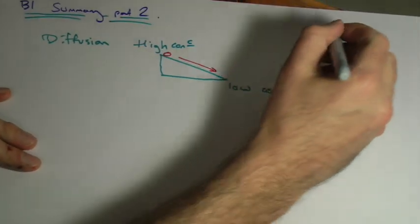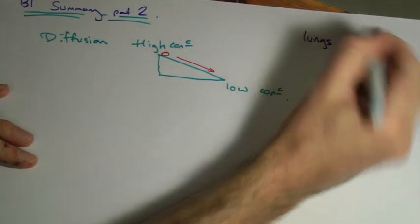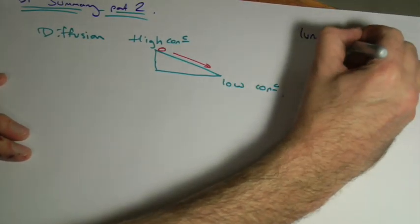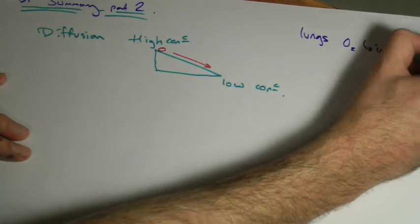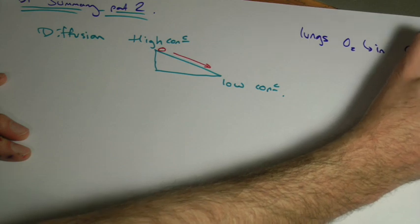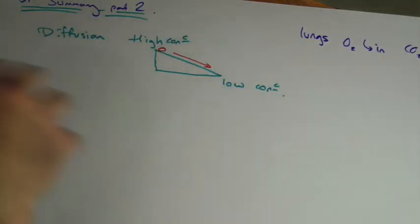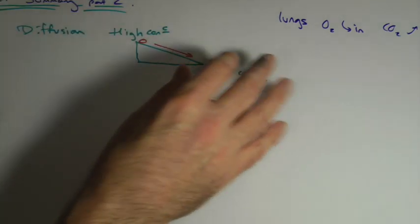Places you tend to find diffusion, the lungs are a classic example. Oxygen will tend to diffuse in from the air into your blood. Carbon dioxide will tend to diffuse out because it's a higher concentration in your blood than it is in the air.